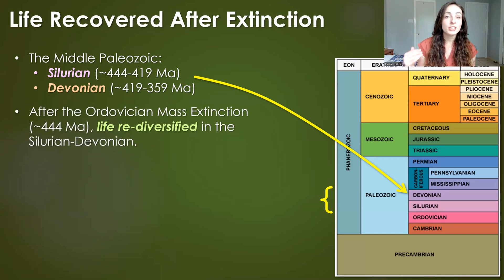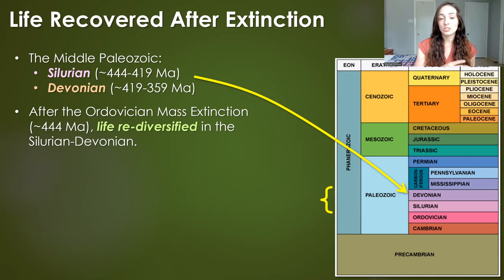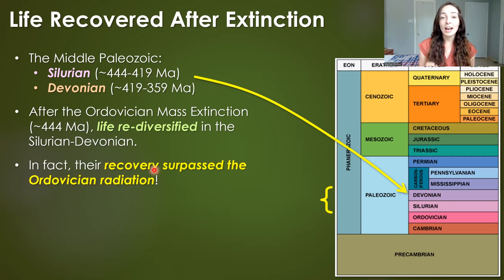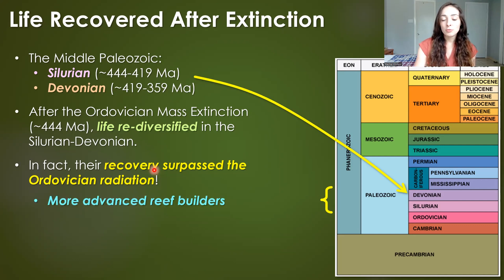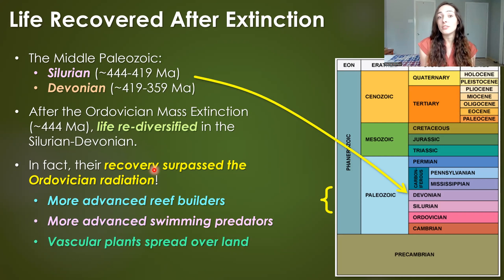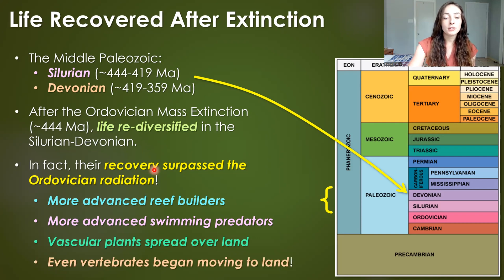At the end of the Ordovician period, just before the Silurian, there was a major mass extinction event — the first of the big five mass extinctions throughout the Phanerozoic. Life in the Silurian and Devonian rediversified quite drastically after that extinction event. Their recovery surpassed the radiation that occurred in the Ordovician — there were more advanced reef builders, more advanced swimming predators, vascular plants spreading throughout land, and even vertebrates began moving to land.